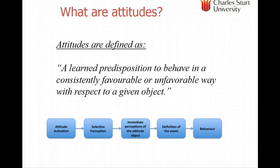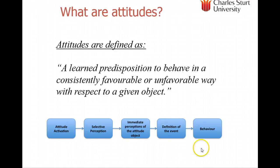So what's an attitude? There are a number of definitions in your text. Here's one that's quite nice: a learned predisposition to behave in a consistently favourable or unfavourable way with respect to a given object. That's really shown in figure 9.5 in your text, which talks about attitude activation — one of the theories of attitudes. The theory works from selective perception towards objects, the way we classify that event, which then leads to behaviour. In other words, it's a learned predisposition.